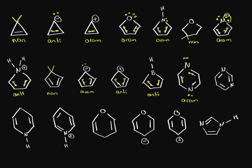On this one it's literally no different from the previous one — we still have the pi electrons from one nitrogen being used as a double bond and the pi electrons from the other nitrogen being used as a double bond. So we have 1, 2, 3, 4, 5, 6, and it's still aromatic.